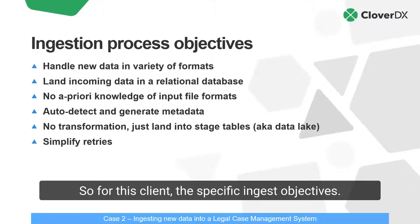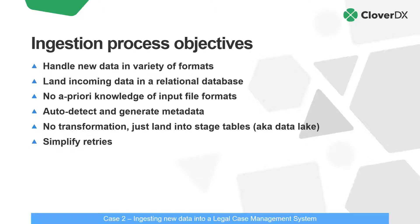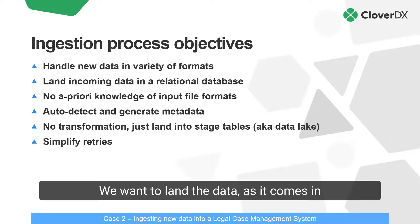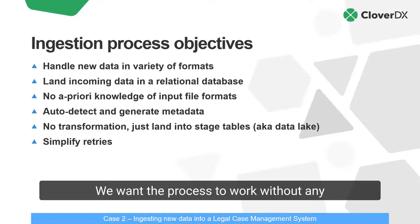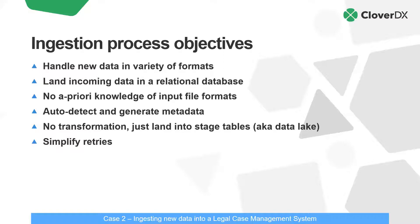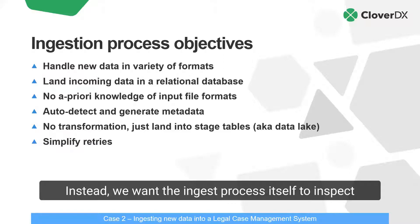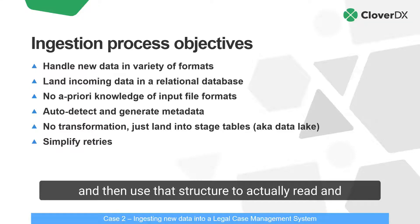For this client, the specific ingest objectives are: we need to handle client data in a variety of file formats. We want to land the data as it comes in into some staging table in a relational database. We want the process to work without any advanced knowledge of the incoming file formats — instead, we want the ingest process itself to inspect the incoming file, detect what the structure is, and then use that structure to actually read and load the data into these staging tables.